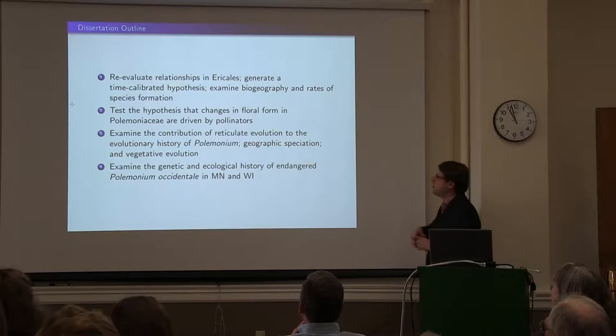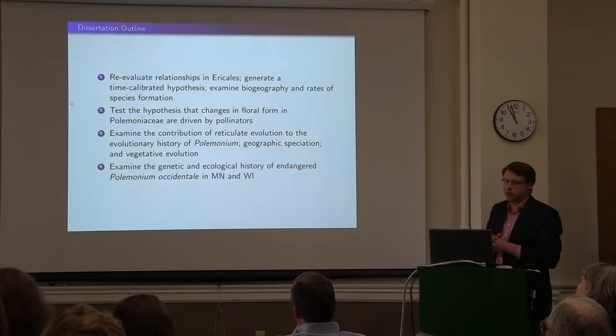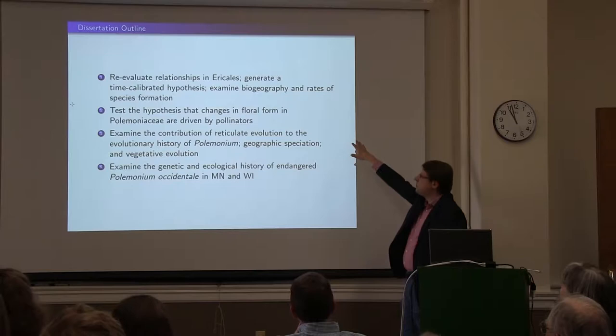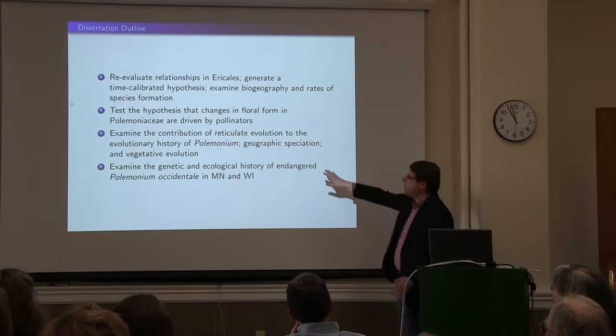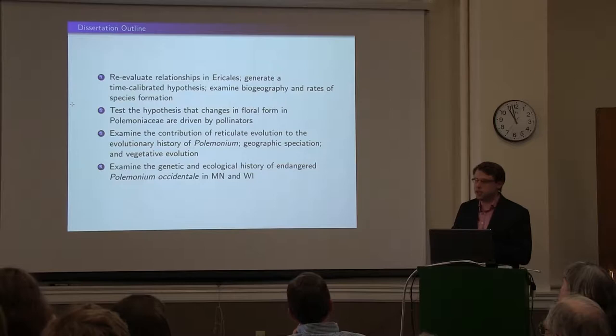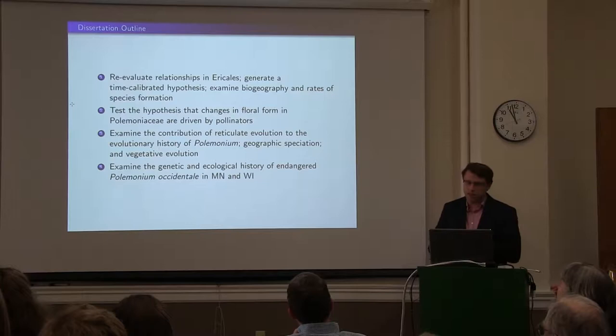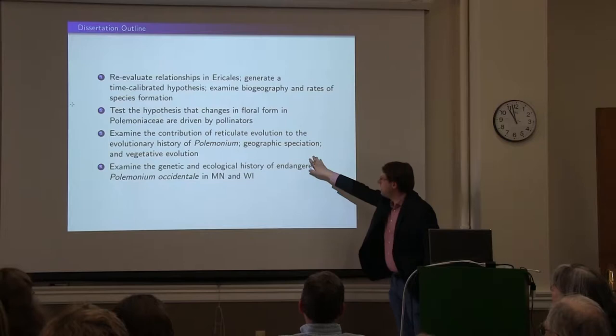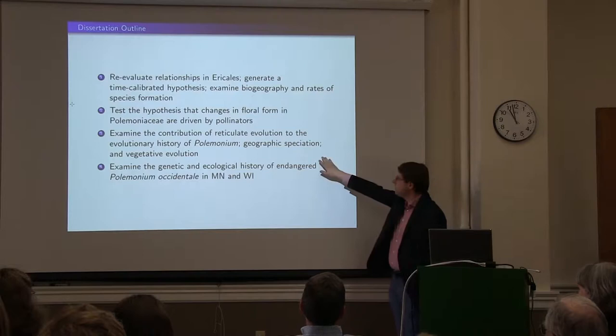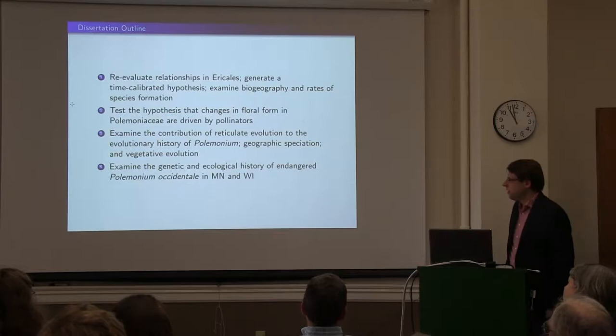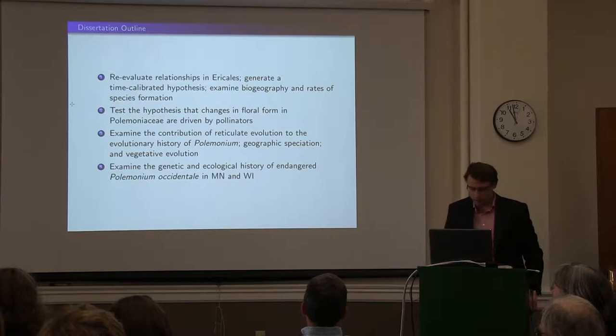More formally: we're going to re-examine evolutionary relationships in the order Ericales, and we have a time-calibrated hypothesis we can use to examine speciation and historical biogeography. Second chapter, I'm going to test the hypothesis that change in floral form in the family Polemoniaceae is a response to natural selection by pollinators. Third chapter, examine the contribution of reticulate evolution to the evolutionary history of the genus Polemonium. I'll also talk about vegetative evolution in the genus. And then the last chapter, I'm going to examine the genetic and ecological history of Polemonium lacustre, which is endemic — the subspecies is endemic to Minnesota and Wisconsin.